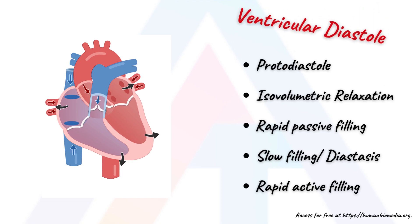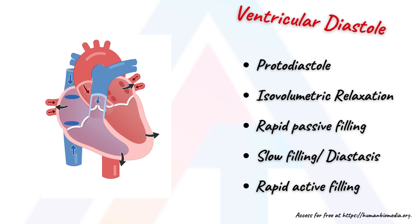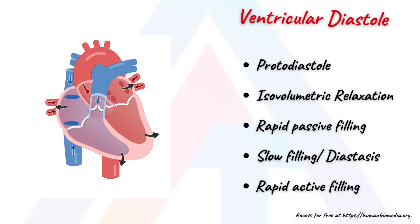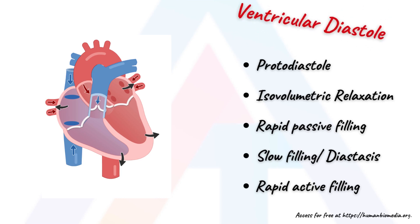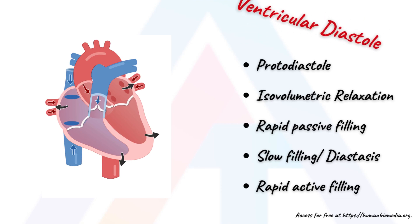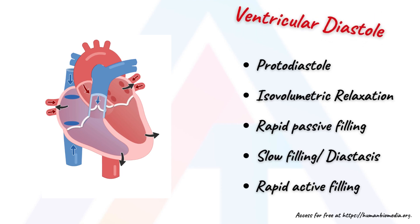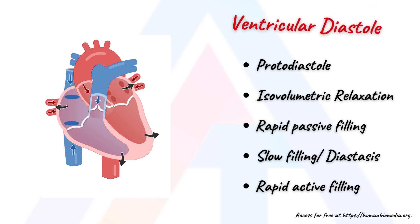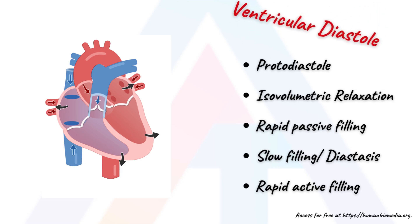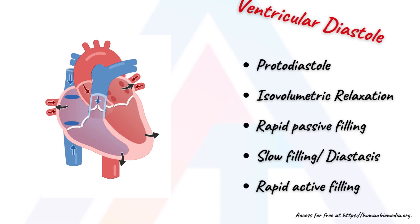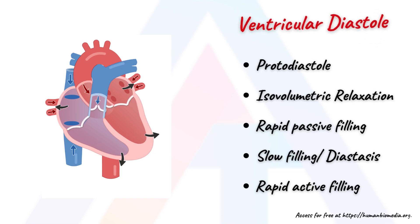Both chambers are now in diastole, which we discussed a few minutes back. The atrioventricular valves are open and the semilunar valves remain closed. The cardiac cycle is now complete. The last phase of ventricular diastole — that is the rapid active filling of the ventricle — coincides with the atrial systole, and the rhythmic cycle continues.